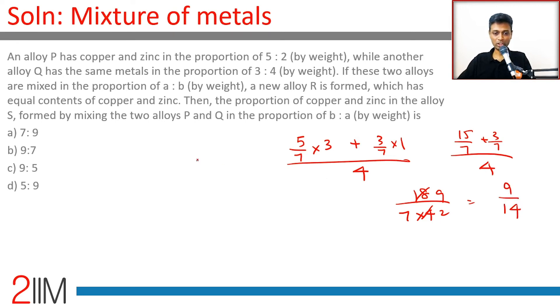This is 9/14 copper, so copper to zinc will be in the ratio 9:5. Choice C, done.